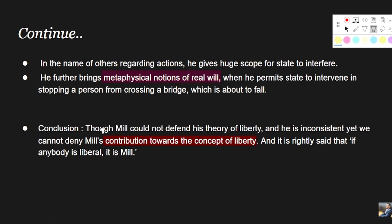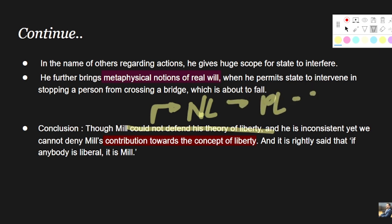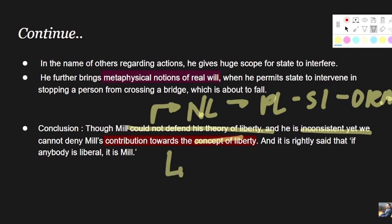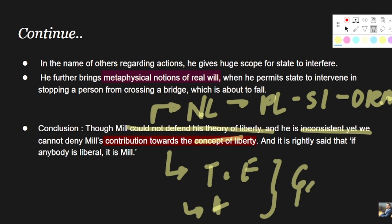The conclusion we have to draw: though Mill could not defend his theory of liberty — because liberty in its true sense propounds negative liberty where there is no state intervention, and he could not defend that — he brought the notion of positive liberty through state intervention in other-regarding actions, making him inconsistent. Yet we cannot deny Mill's contribution towards the concept of liberty, because he propounded two most important areas: first, liberty of thought and expression, and second, liberty of action, which were his major contributions.